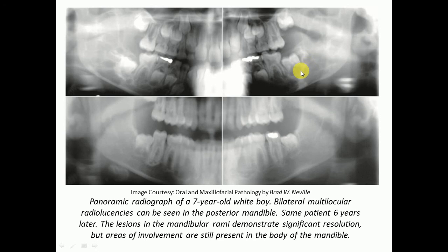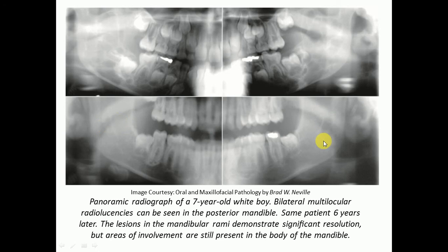Here we can see the panoramic radiograph of a seven-year-old patient showing bilateral multilocular radiolucencies in the posterior mandible. In the same patient after six years, the lesion in the mandibular rami demonstrates significant resolution — those radiolucencies are largely gone — though some radiolucencies may persist in the body area, confirming that the condition regresses with time.